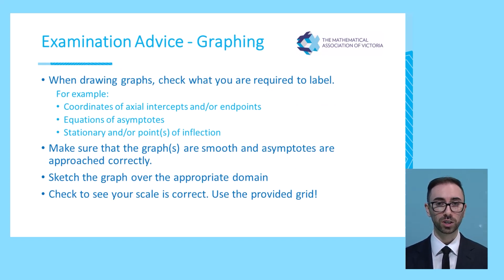Graphing is most likely to be a feature on either exam 1 or exam 2, or potentially on both. And when drawing graphs, check what you are required to label. Make sure you reread the question. Check to see if you want to label coordinates of axial intercepts or endpoints, equations of asymptotes, or any stationary points or points of inflections. Make sure that your graph is smooth, and if there are asymptotes, make sure that your graph asymptotes towards the asymptote correctly, that it shouldn't cross it or touch it. Sketch the graph over the appropriate domain, and most importantly, check to see that your scale is correct. Use the grid provided to help you. Check to see if key points are within a reasonable section of the grid, and in exam 2 in particular, where you have access to technology, you can fit your window settings to the grid provided on the paper.